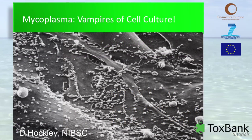In this picture you can see mycoplasma organisms covering the surface of a series of animal cells. This gives you an indication that these are very small organisms — they're one of the smallest bacteria known. They also often are closely associated with the cell membrane in cell cultures and through that are actually feeding on the cells, hence the name 'vampires of cell culture'.